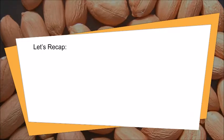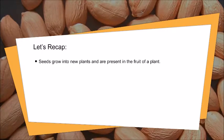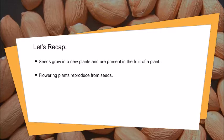Let us recap. Seeds grow into new plants and are present in the fruit of a plant. The structure of a seed includes the seed coat, one or two cotyledons, and the embryo, or the baby plant.